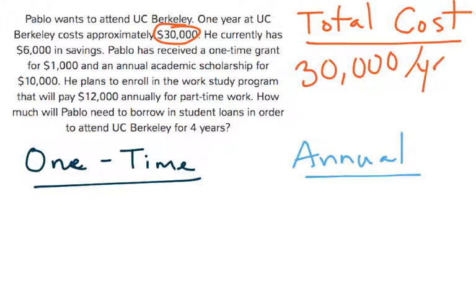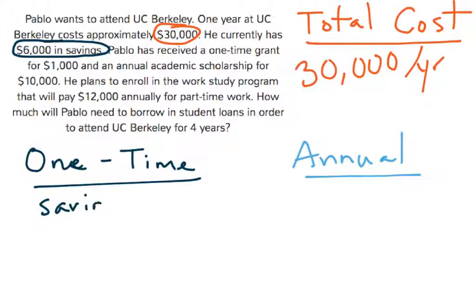He currently has $6,000 in savings. Here's the way to think about that: he has $6,000 in savings, and that can be used once. Once he uses the savings, it's gone. So I'm going to write savings over here as a one-time way to pay.